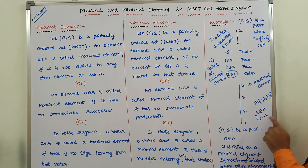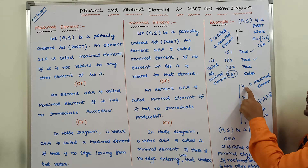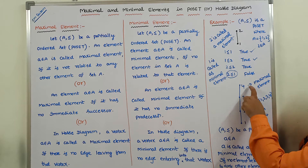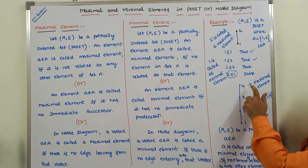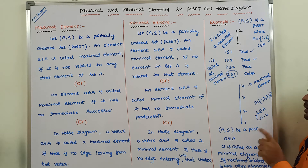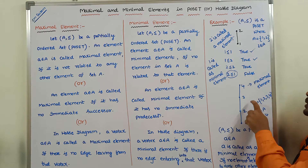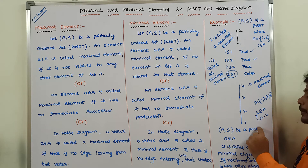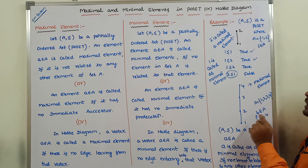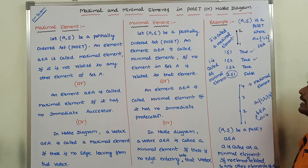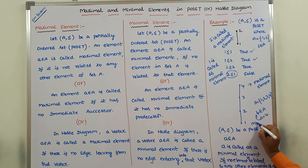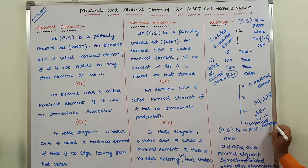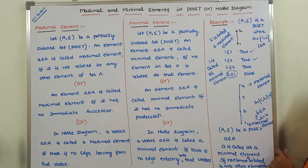Next example. What is the minimal element? 4 is related with 4, 3 is related with 4, so 3 ≤ 4. 2 is related with 2 and 2 is related with 3, so 2 ≤ 3. 1 is related with 2, so 1 ≤ 2. But no element is there to relate with element 1. Hence, element 1 is called a minimal element, because no element in set A is related with that element.